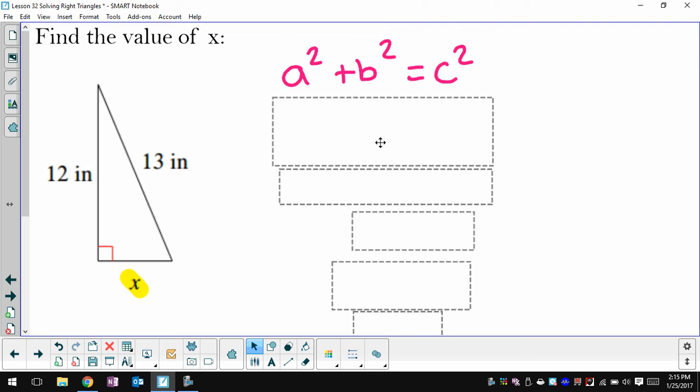So I'll start by writing my Pythagorean Theorem. The side that's across from 90, or the hypotenuse, is 13. So 13 is the number I'm going to put in for c. And then x and 12, it doesn't matter which is a or which is b. I tend to put the variable first.